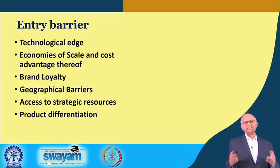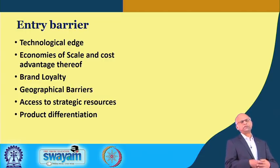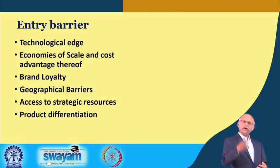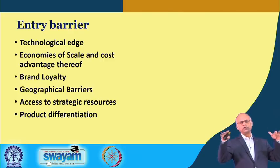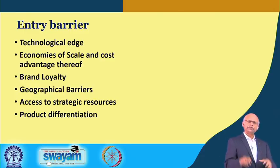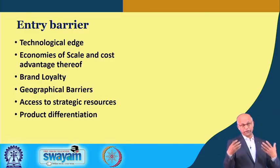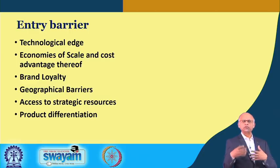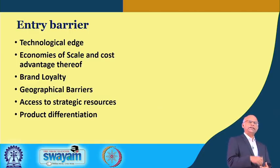Technological economies of scale and cost advantage: suppose you have huge manufacturing capability, so per-unit cost is low because overhead cost is distributed among many units. You will have a cost advantage. Brand loyalty — these are superimposition of some of the points, but that is how you create entry barrier.